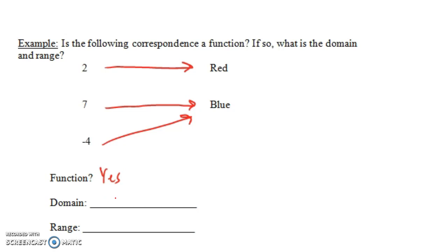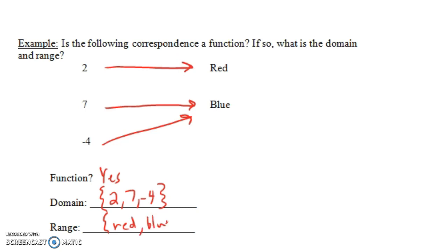What is the domain? The domain is just the set of these three things: 2, 7, and minus 4. When you have a set that has finitely many things in it and you just list them out, you put curly braces around your set. If it's like an interval, you don't use curly braces. The range in this case is just the two colors, red and blue.